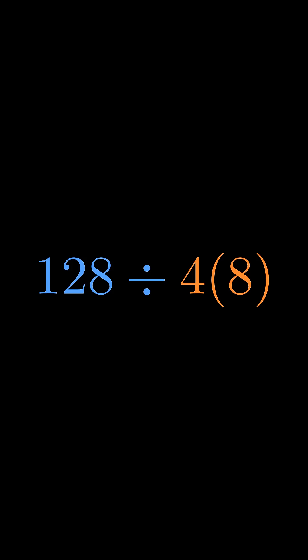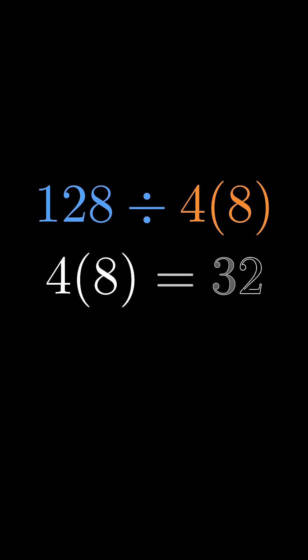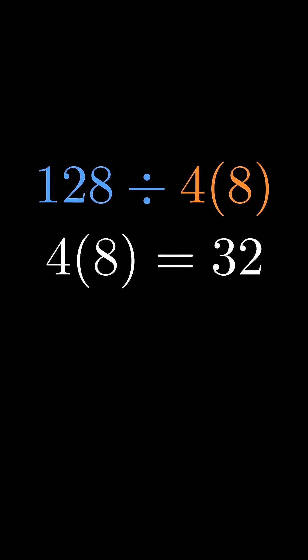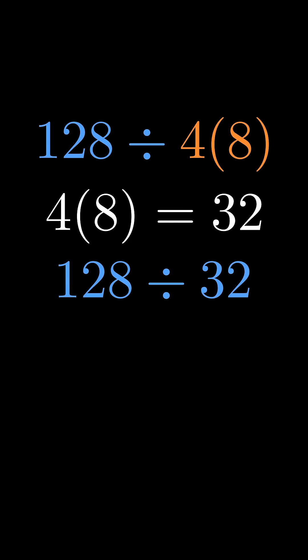Four next to the parentheses, no times sign. Most people do this multiplication first: 4 × 8 equals 32. 128 divided by 32 equals 4. But wait, there's another answer.